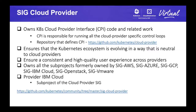The SIG owns all the subprojects, which were formerly known as SIGs themselves for different cloud providers, like SIG AWS, SIG Azure, GCP, SIG IBM Cloud, SIG OpenStack, SIG VMware, and so on. The provider IBM Cloud is a subproject of SIG Cloud Provider. There will be a separate talk on SIG Cloud Provider itself, and you can also refer to documentation at the URL mentioned at the bottom of the slide.